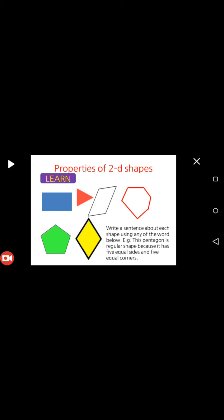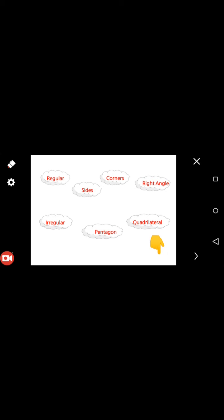Write a sentence about each shape using any of the words below. For example, this shape is a pentagon. It is a regular shape because it has five equal sides and five equal corners: one, two, three, four, five. Use these words: regular, sides, corner, right angle, quadrilateral, pentagon, irregular.